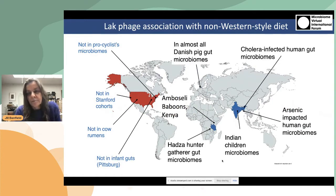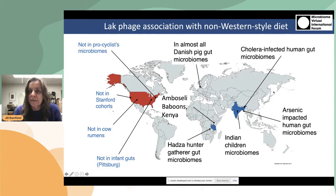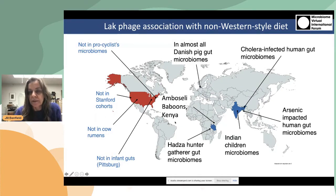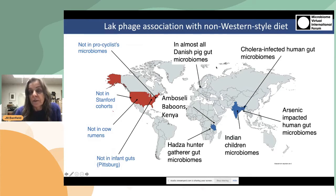When we looked across many cohorts — humans and animals available in our data and public data — we found that this is a common phenomenon, but mostly in people with a non-Western style diet. This is not surprising because a non-Western diet correlates with dominance of Prevotella versus Bacteroides. Almost all of the Danish pigs and all of two social groups of baboons from Kenya contained the LAC phages.